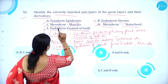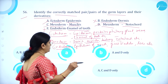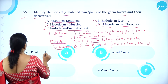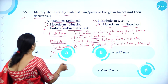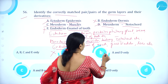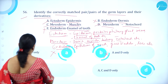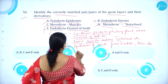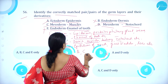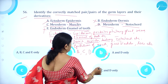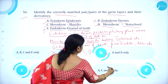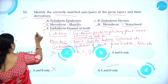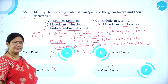So A, C, and D are the correct pairs. Option A (A, B, C, E only) is wrong. Option B (A and D only) is wrong. Option C (A and B only) is wrong. Option D (A, C, D) is correct.